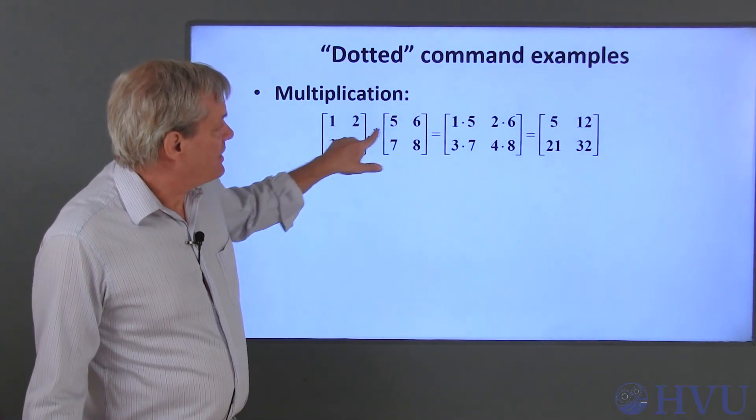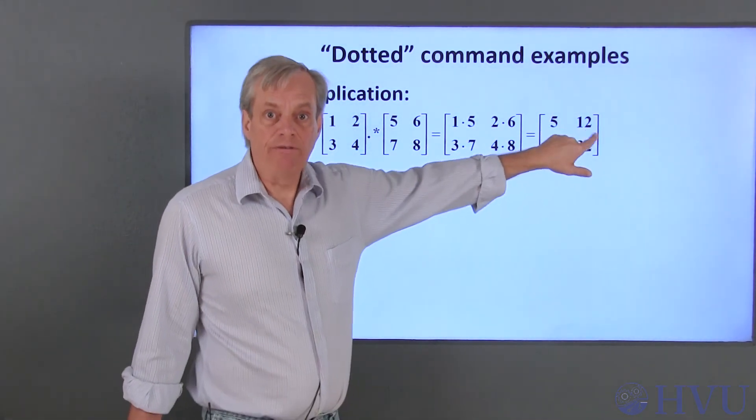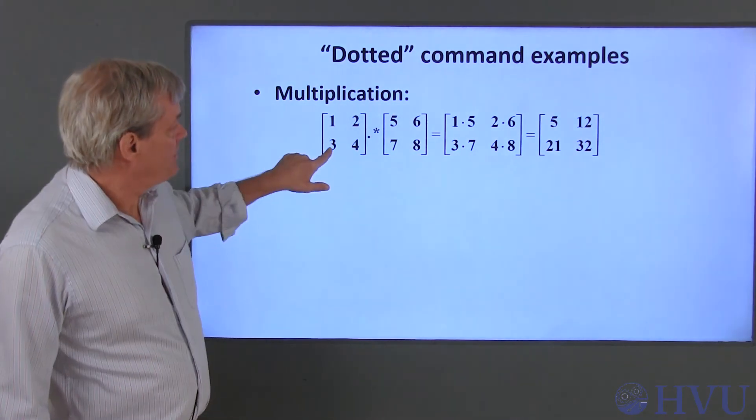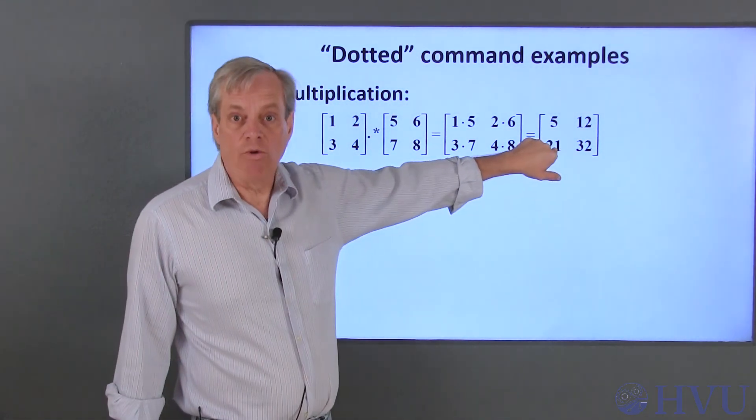The first row and second column give 2 times 6, which is 12. The element in the second row and the first column is 3 times 7, which is 21, and so on.